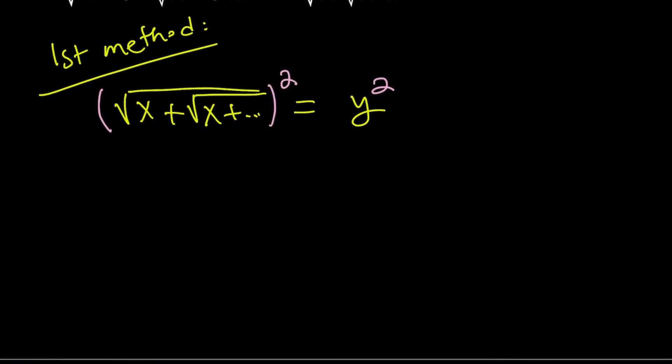So if you square both sides, obviously the outermost radical, the square root sign, is going to disappear.